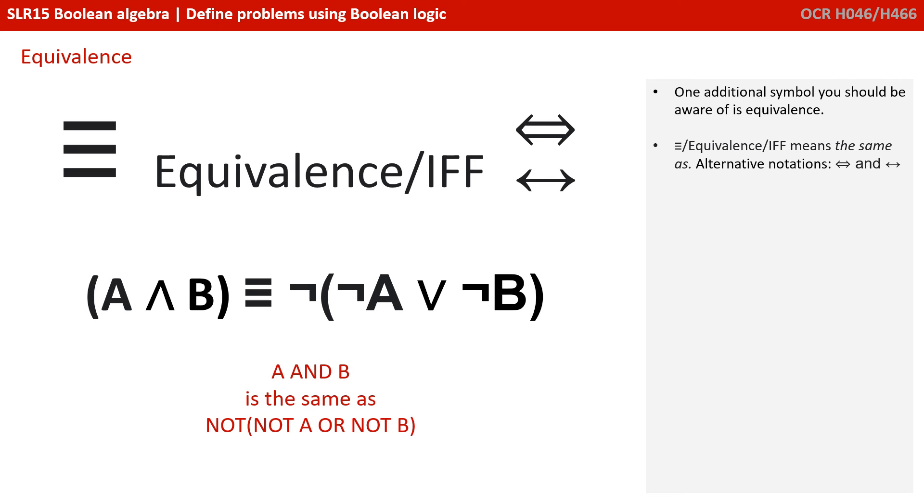One additional symbol you should be aware of is what we know as equivalence. This looks like a triple equals. It means the same as, and again it has a couple of alternative notations based on a double-headed arrow.